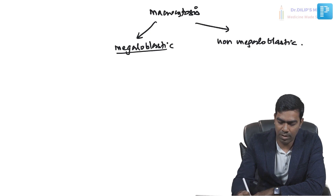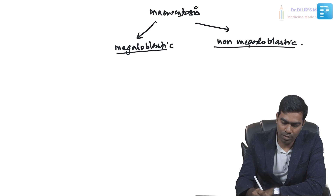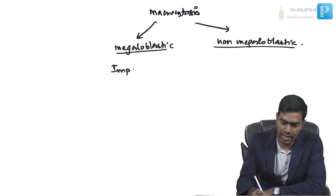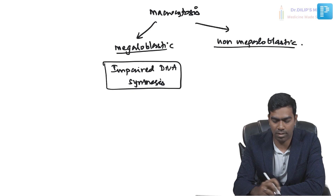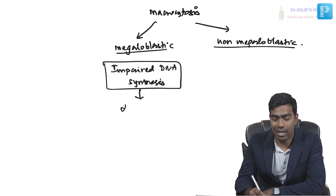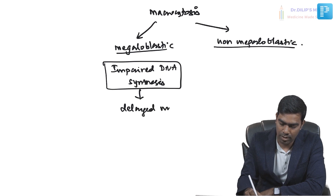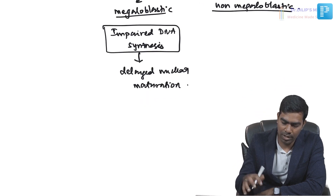If you want to know the differences between megaloblastic and non-megaloblastic macrocytosis, it is actually quite simple. In megaloblastic macrocytosis, you have impaired DNA synthesis — that is the basic idea. Because of this impaired DNA synthesis, there will be delayed nuclear maturation.